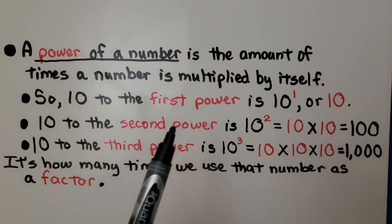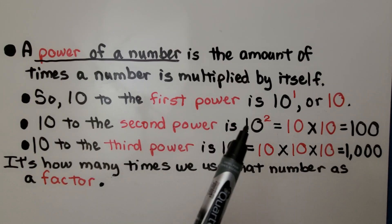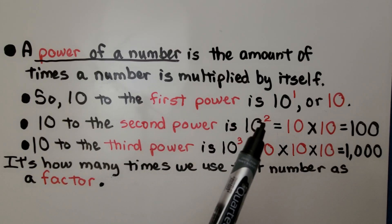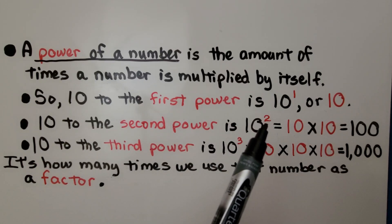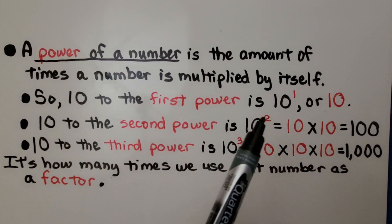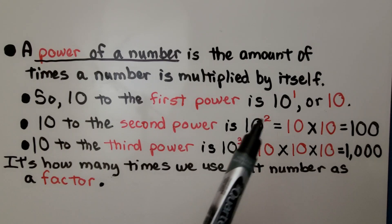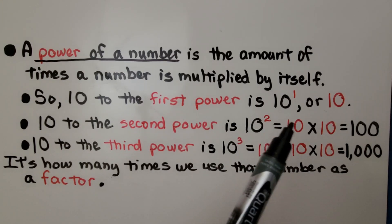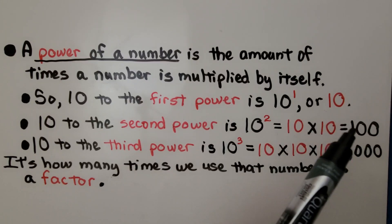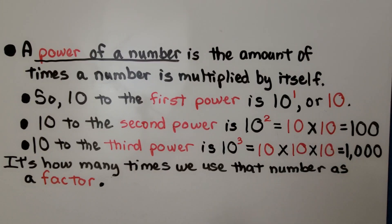10 to the second power — that's 10 with a little 2 exponent — means we have 2 of these 10s multiplied. So it's 10 times 10. We have 2 of them. That's equal to 100.